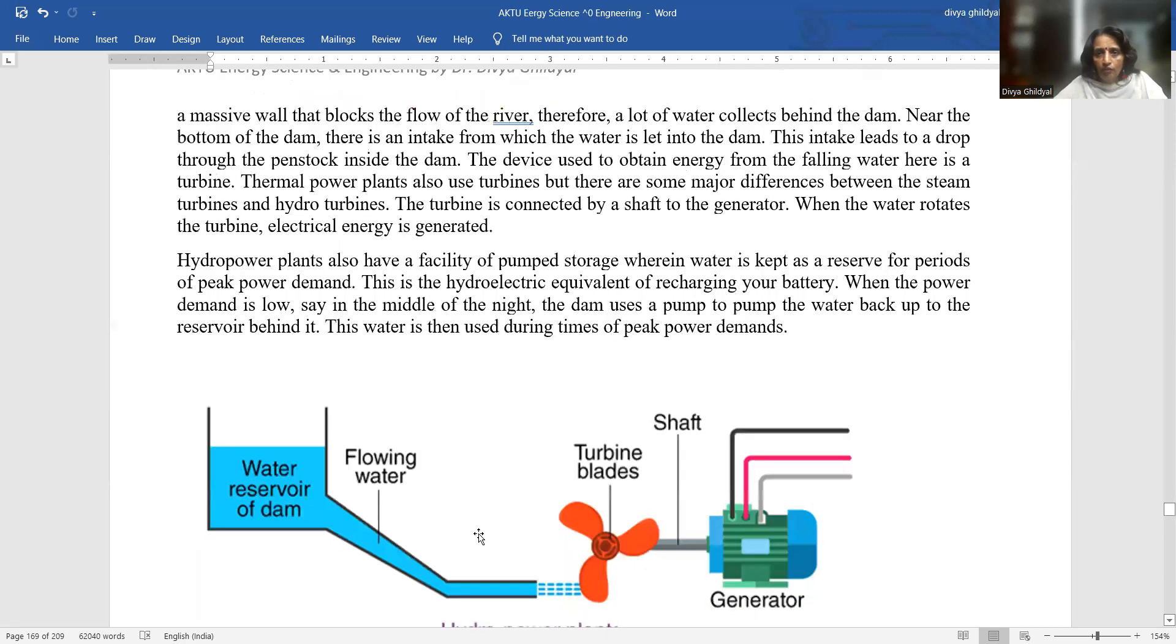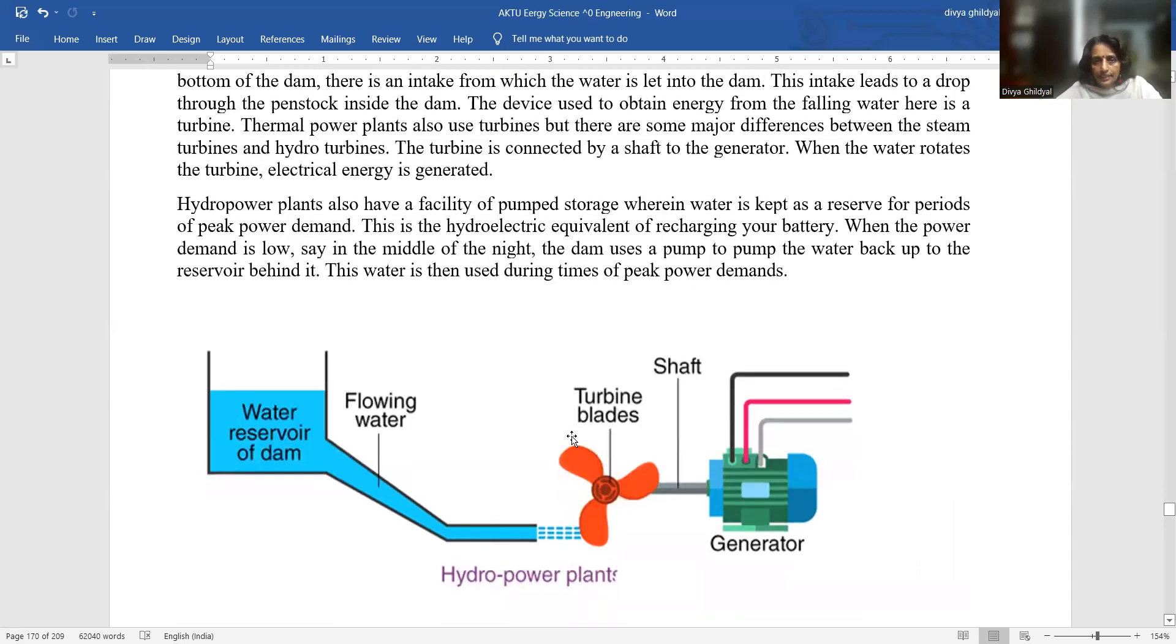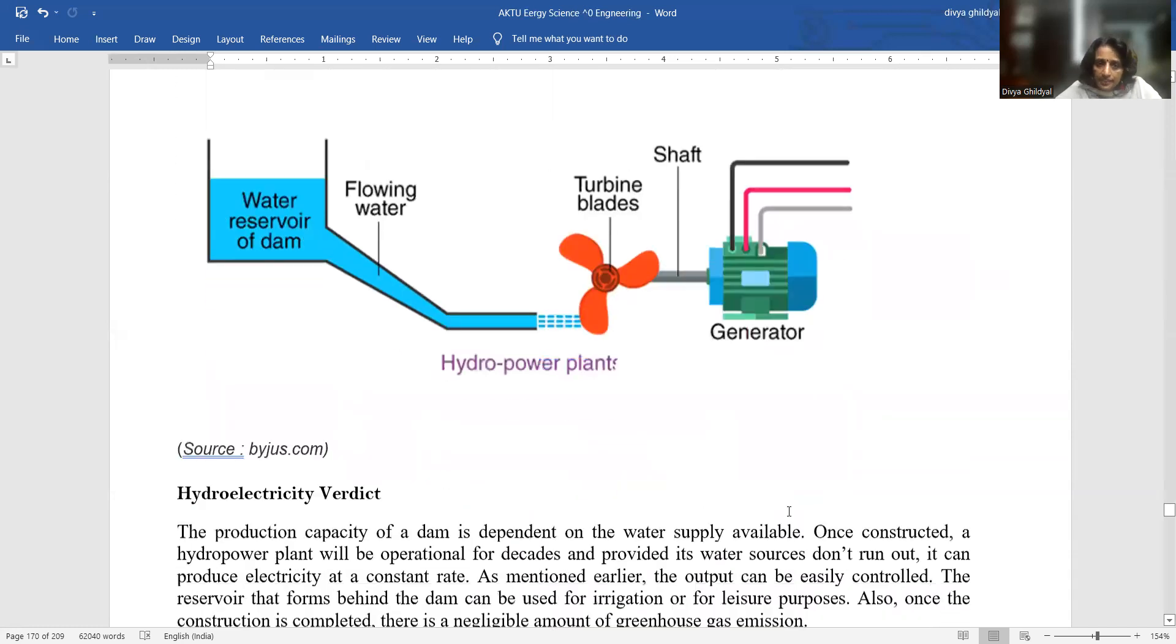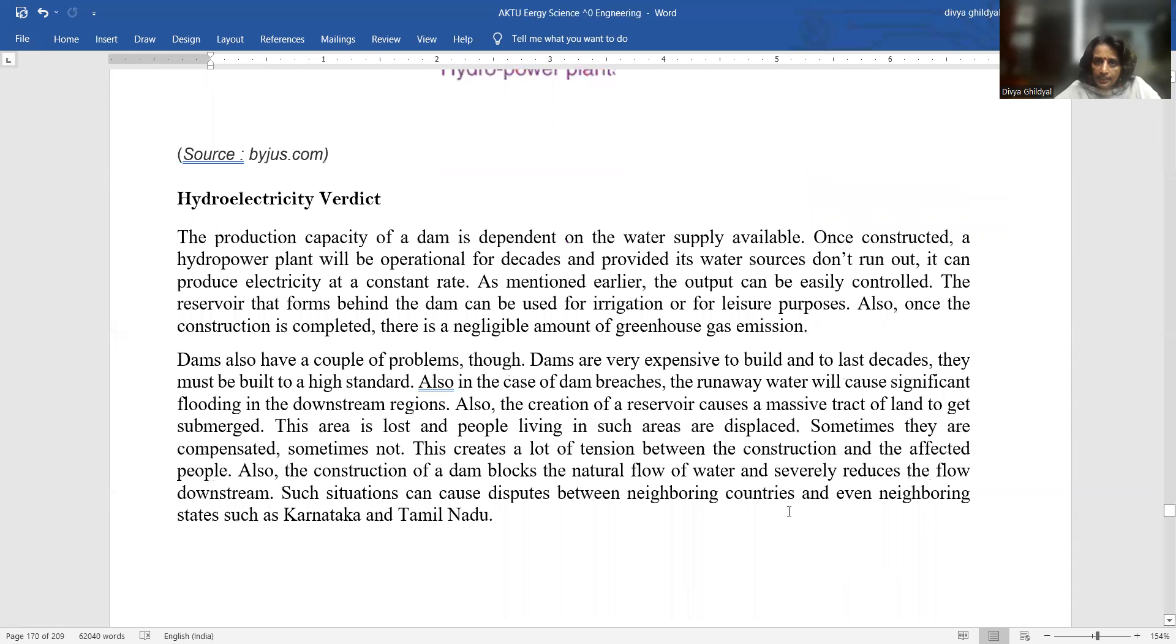And this intake leads to a drop through the penstock inside the dam. The device used to obtain energy from the falling water here is a turbine. This flowing water, because of the height difference - the dam is kept at a height and this is my base - the water is flowing from this height, creating hydropower. This hydropower has been used to run my turbine and generate electricity as per my requirement. This is the basic diagram. Hydroelectricity is produced this way.